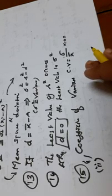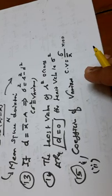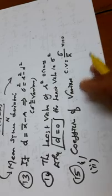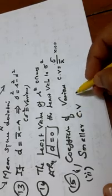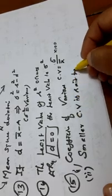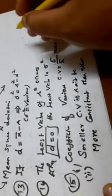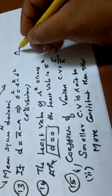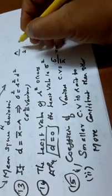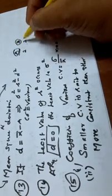The coefficient of variance: if CV equals 0.2, CV equals 0.5, CV equals 0.6, CV equals 3 — what is the least? What is the more consistent? The smallest coefficient of variance means more consistency.